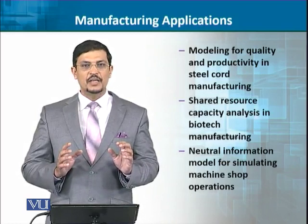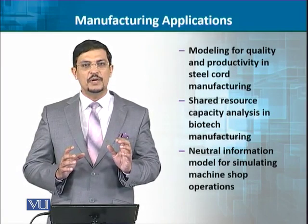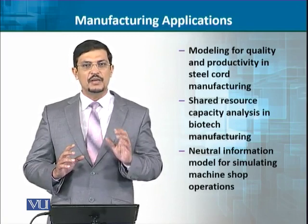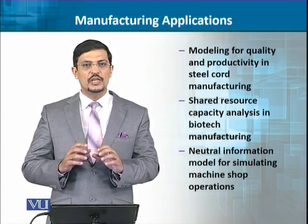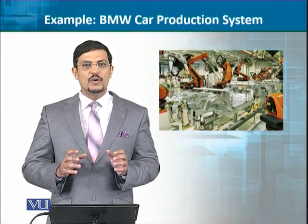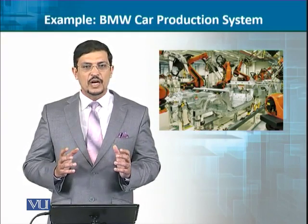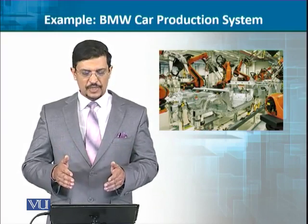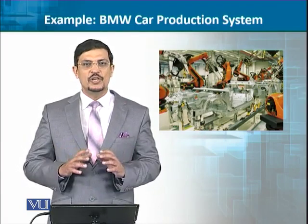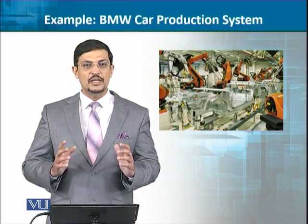Beyond that, you can see that in a factory you have to talk about quality. When you talk about quality, you talk about the system — how things behave within it. Here is an example of a production system. This is a car production system — you can see that a BMW car is manufactured. In the production system there are robots and robotic assembly in which the car is made. These are combined together to form a system. The group behaves as one.